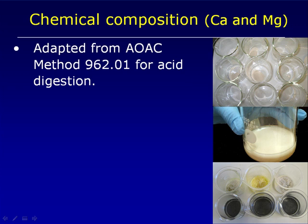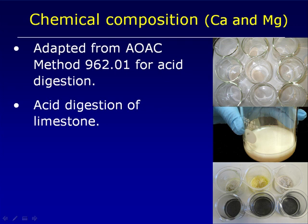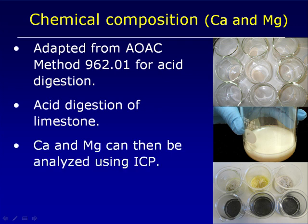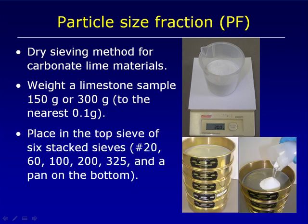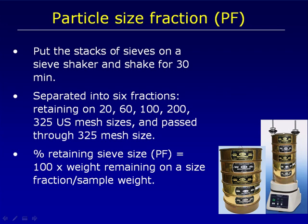The chemical composition is adapted from an AOAC method where we acid digest the limestone, and then with that solution, we can analyze calcium and magnesium levels using an ICP. Particle size analysis involves sieving our lime into different particle size fractions. We weigh out a sample, place it into a series of stacked sieves with standard mesh sizes, place the sieves on a shaker, and then measure how much of the limestone is retained or passes through each of the sieve sizes.